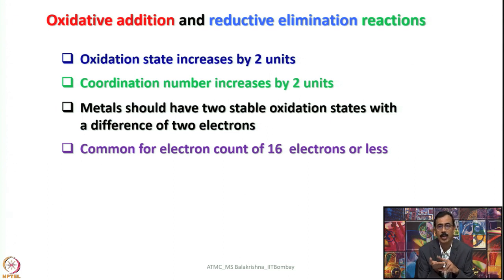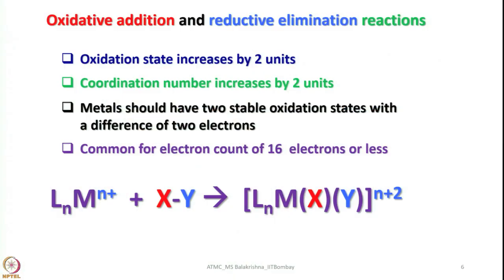For example, a 4-coordinated compound becomes 6-coordinated, a 5-coordinated can become 7-coordinated, or a 3-coordinated becomes 5-coordinated. The most common and important aspect is this should not be an 18-electron saturated system. In general, in order to perform an oxidative addition reaction a metal should have 16 electrons or less and it should be coordinatively unsaturated. One can also perform oxidative addition on a saturated system - I am going to show you some special cases also.